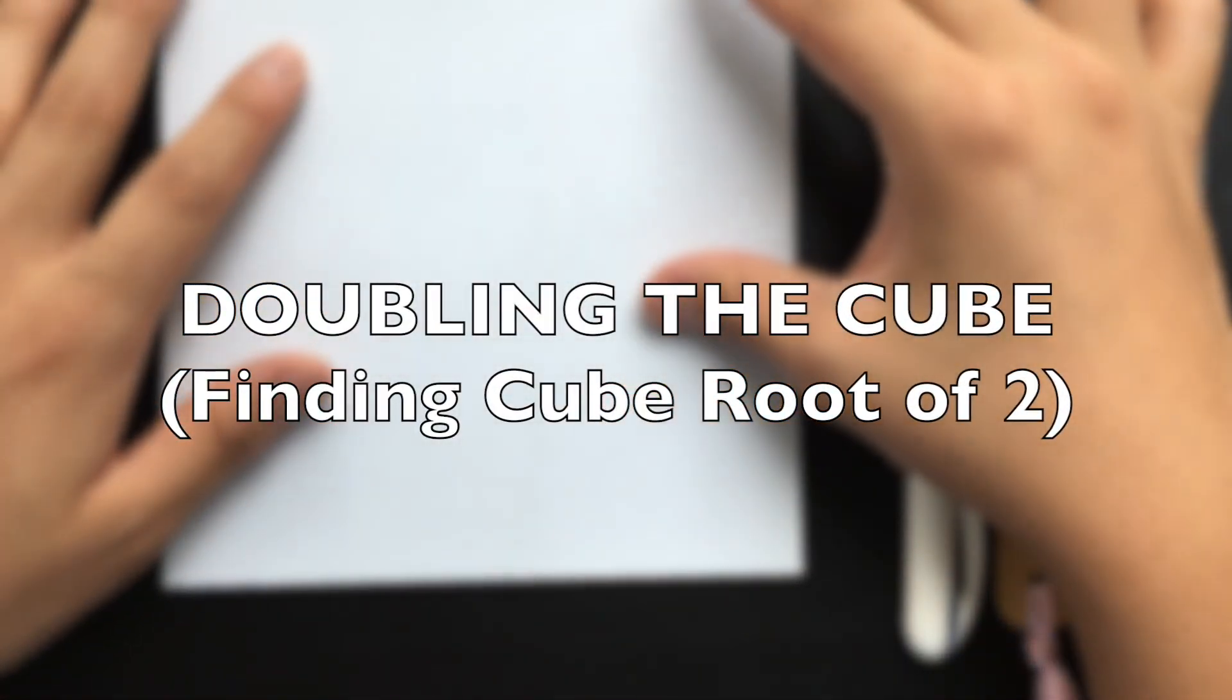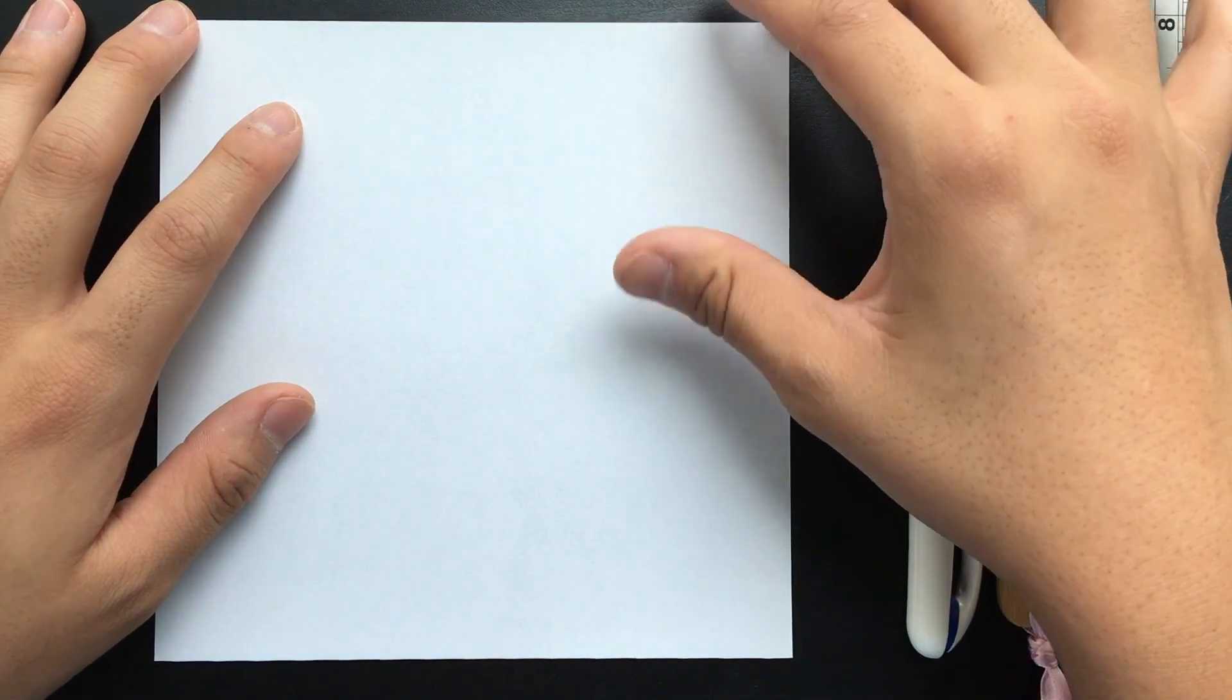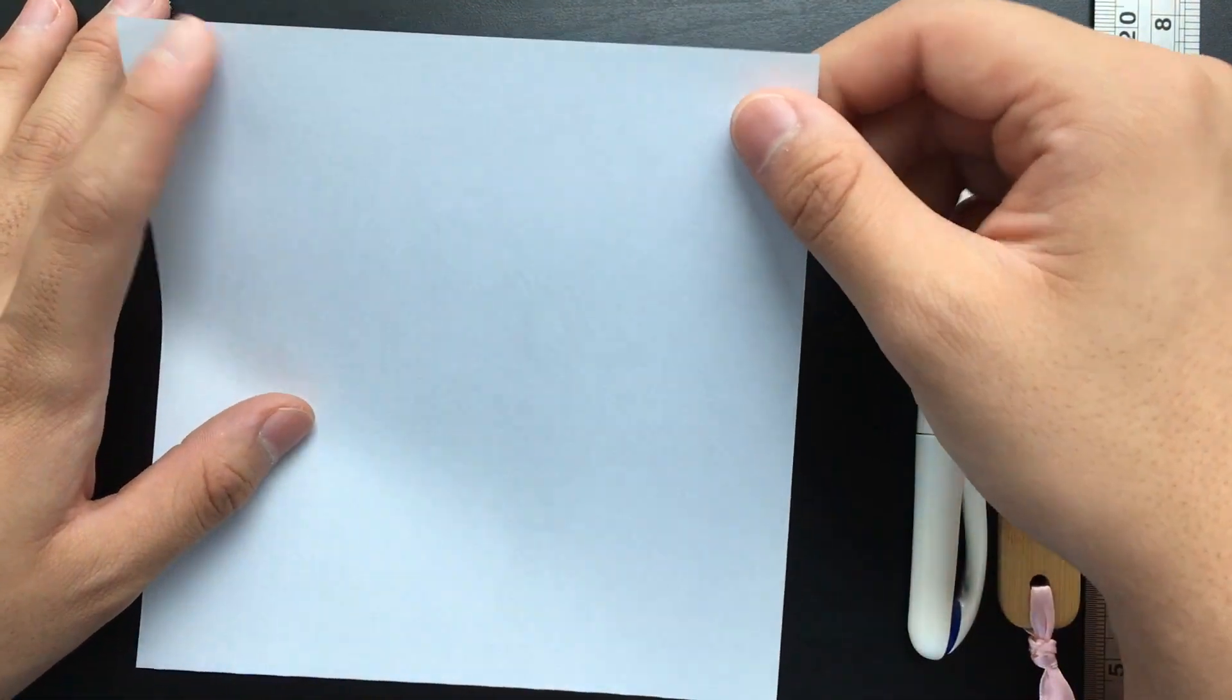In this video I'm going to be showing you how to double the cube using origami and that's finding the cube root of 2 or the side length of a cube that is exactly double in volume.